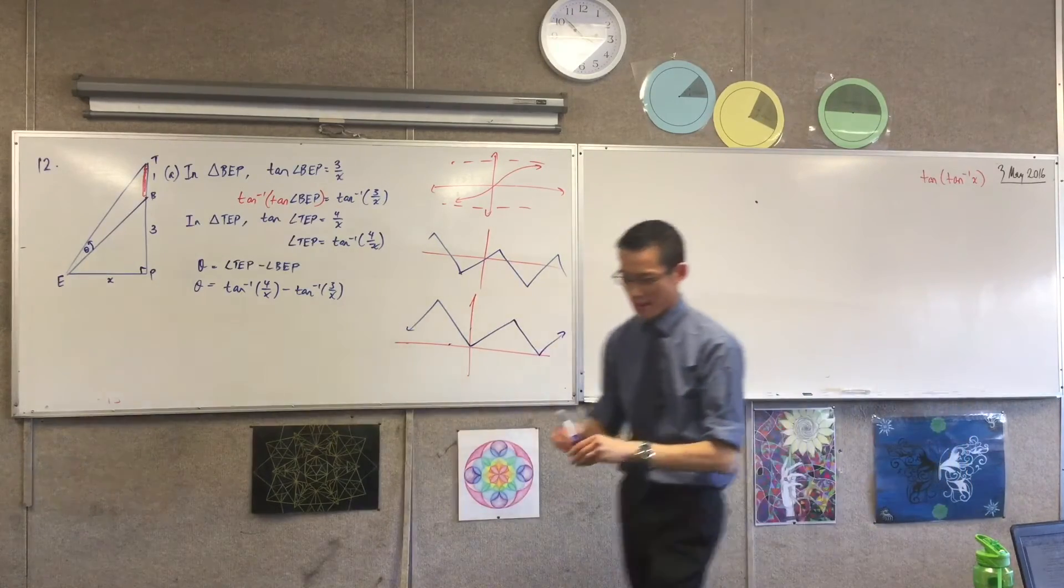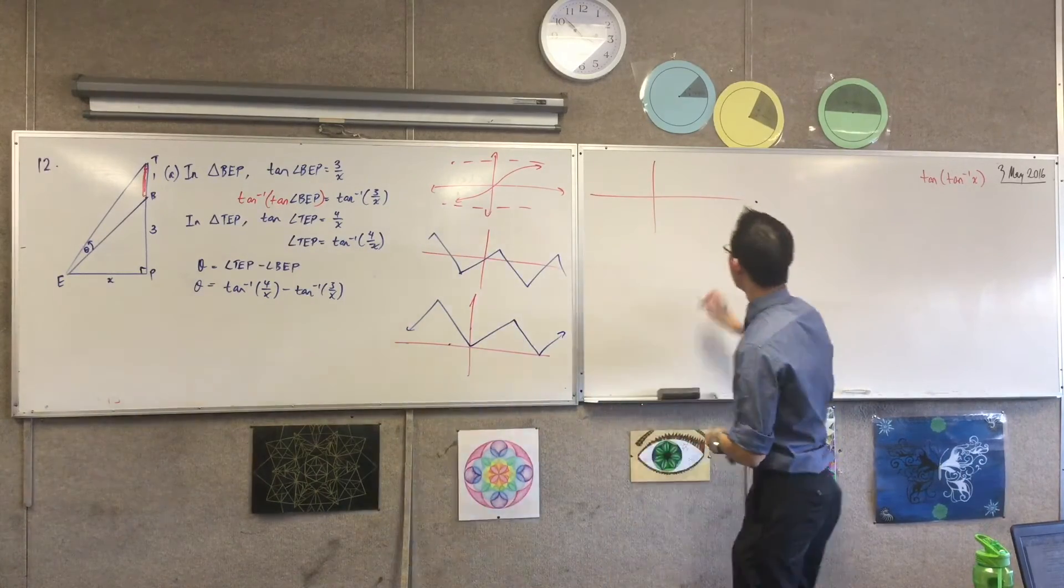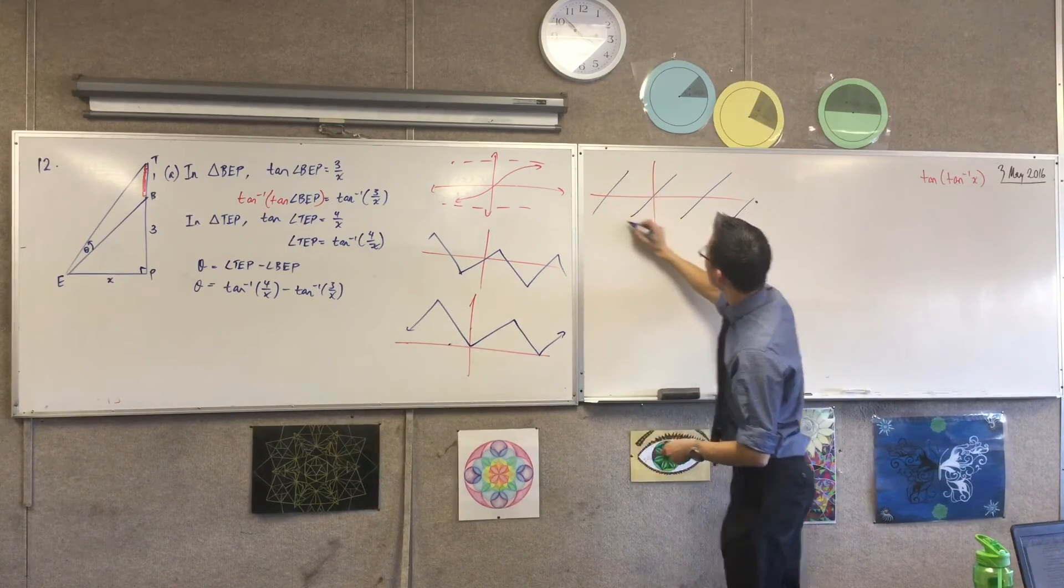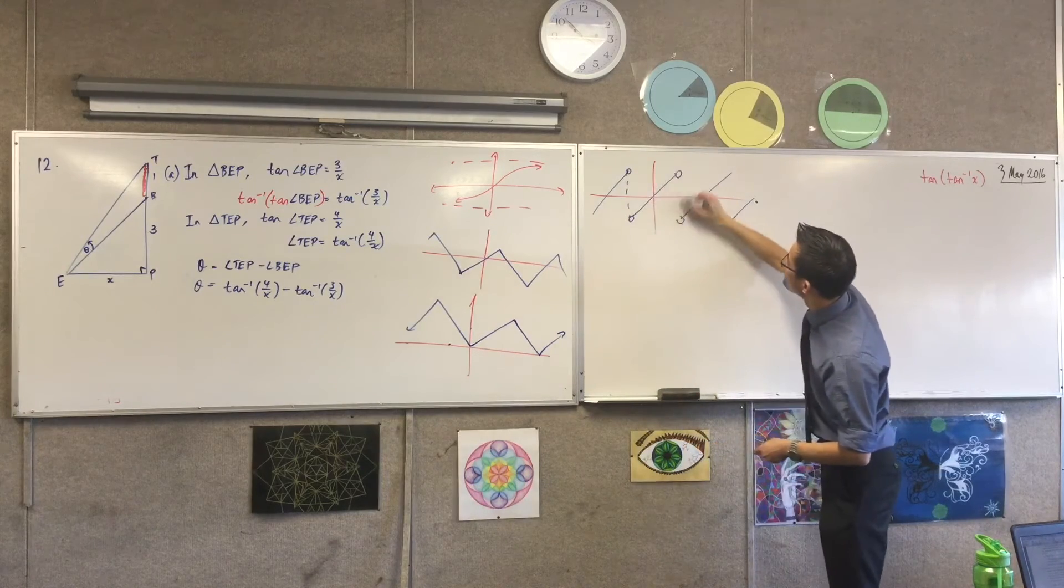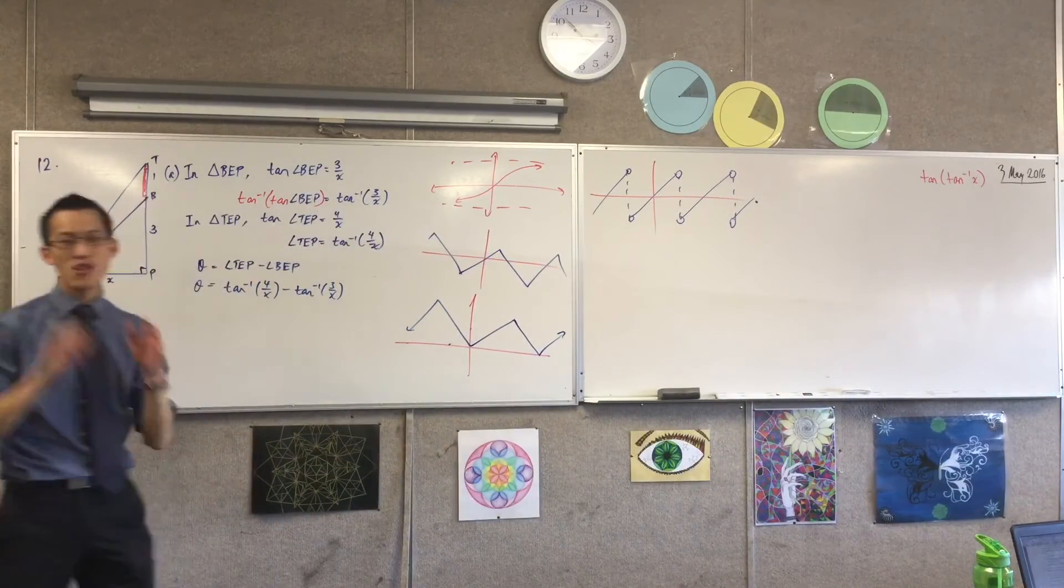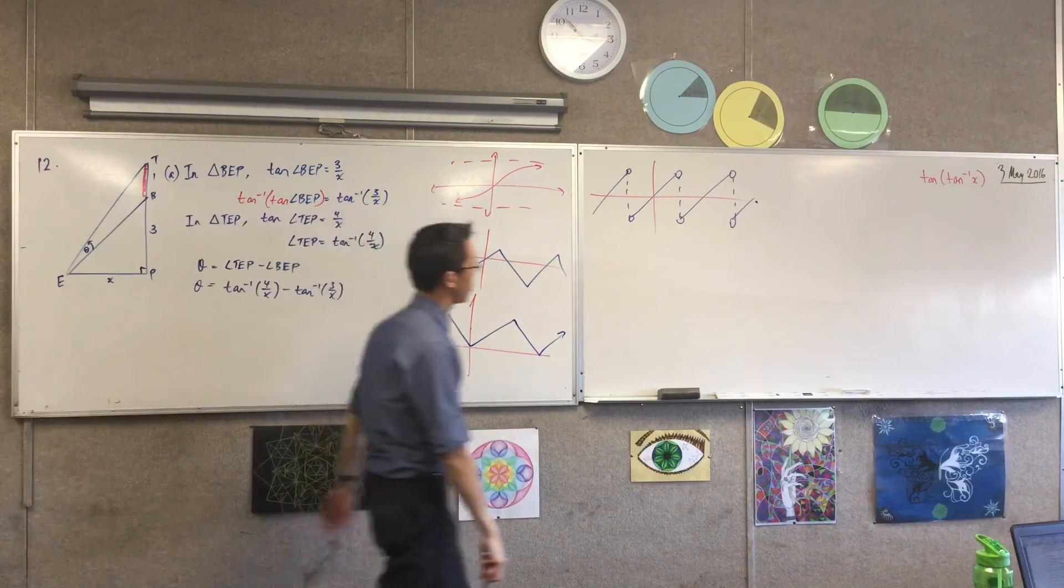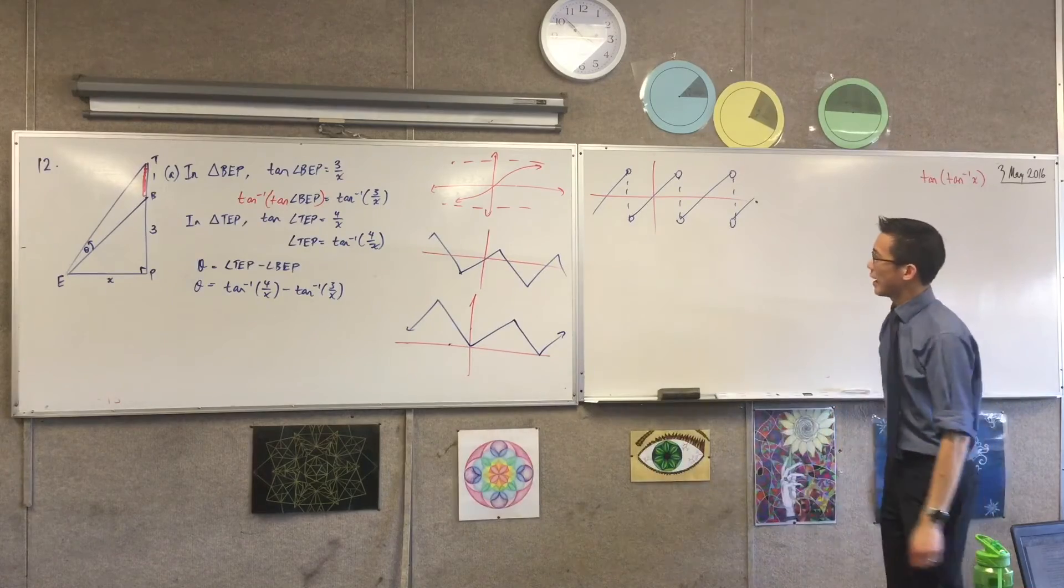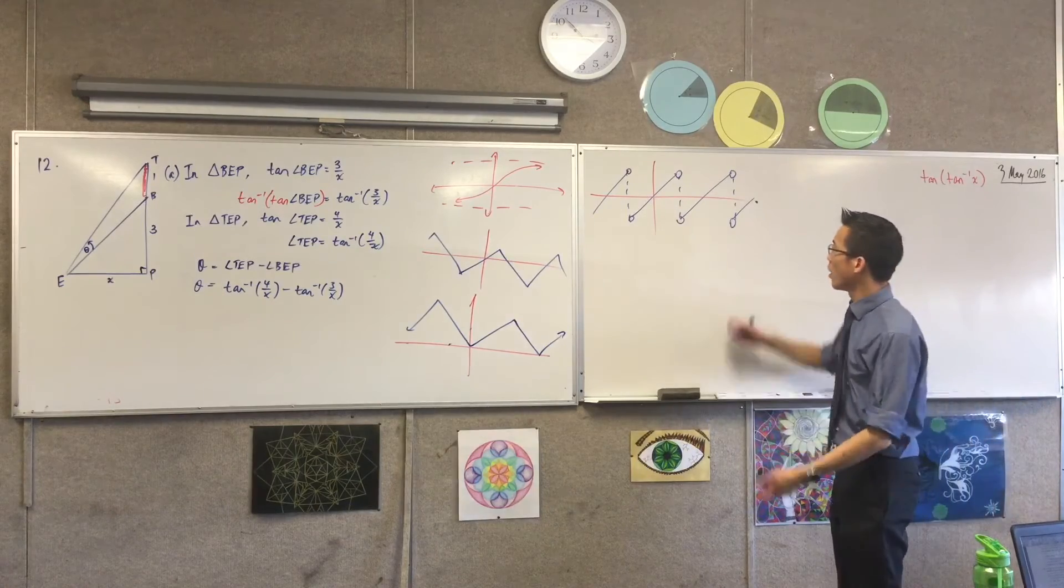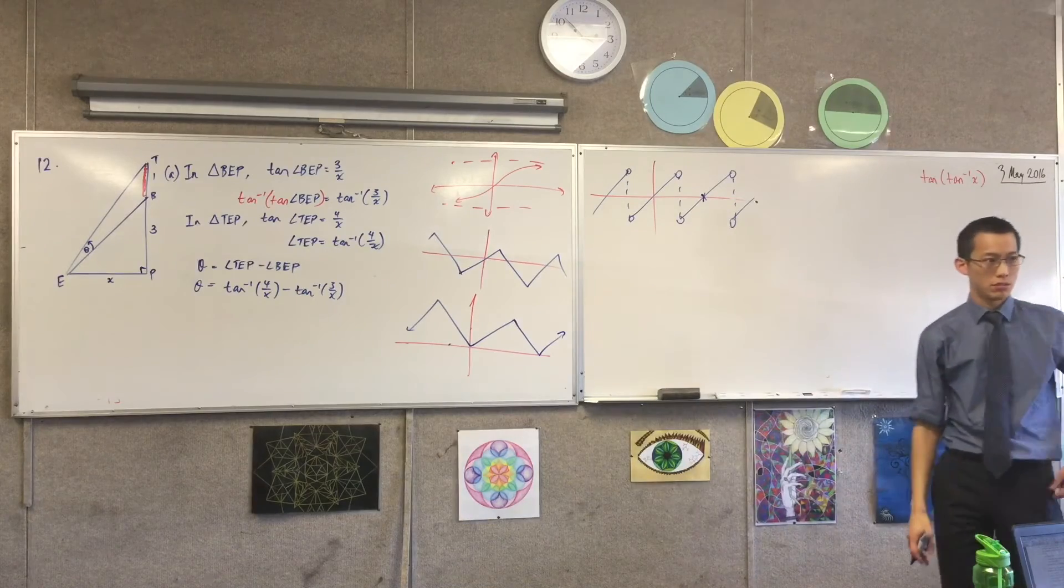Now tan's the weirdest one. I don't know if anyone did tan inverse of tan. I'll show you what it looks like. This is what tan inverse of tan looks like. You can very easily verify this. Grab your calculator and do something like, say this is the tan inverse tan graph. Do tan inverse of tan of pi. What's it going to tell you?